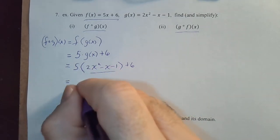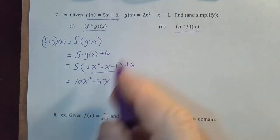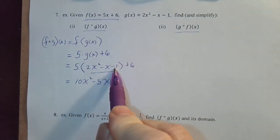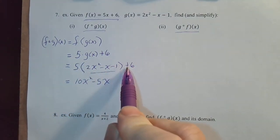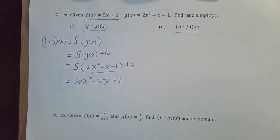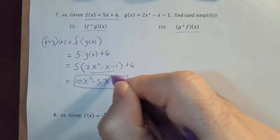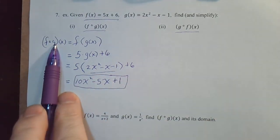So that'll be 10x squared minus 5x minus 5, but what's minus 5 plus 6? Plus 1. So this is f of g of x.